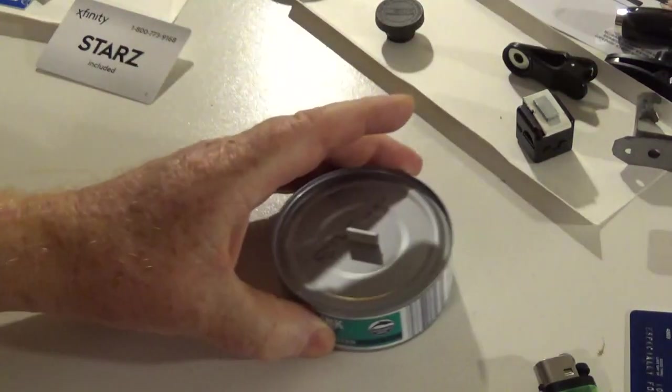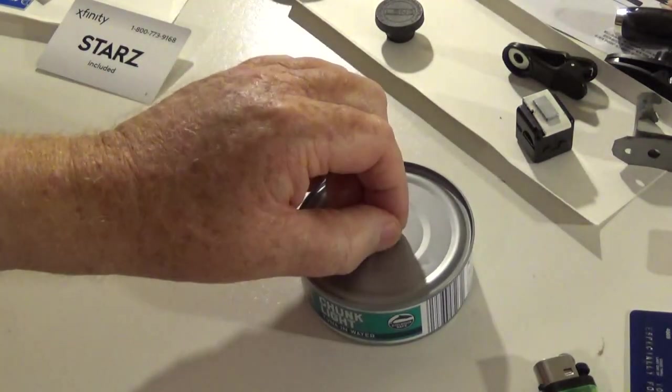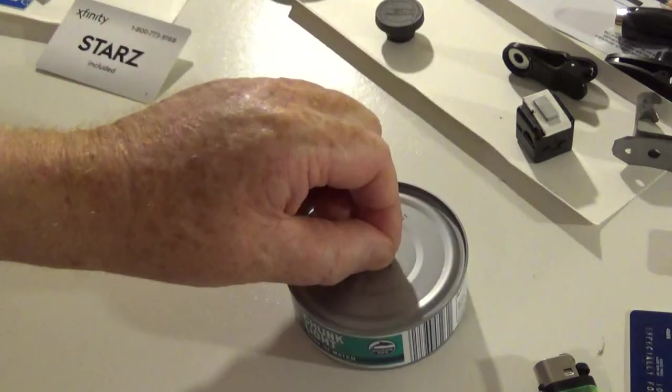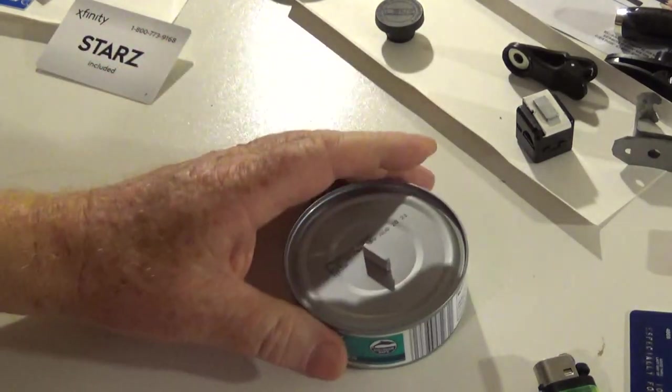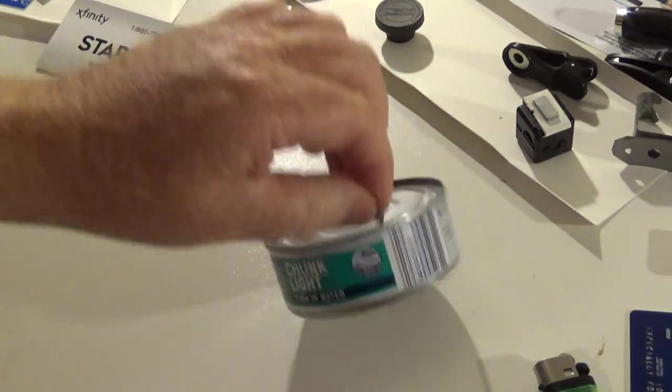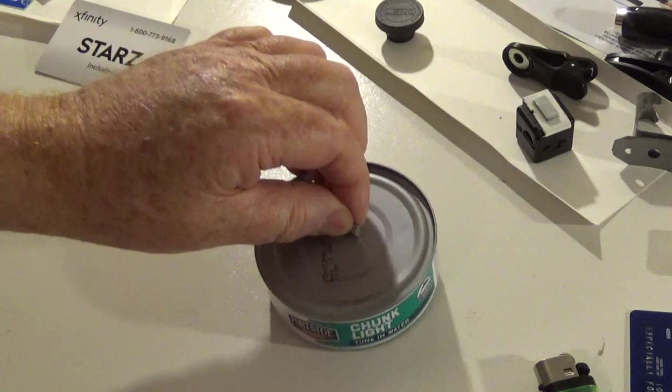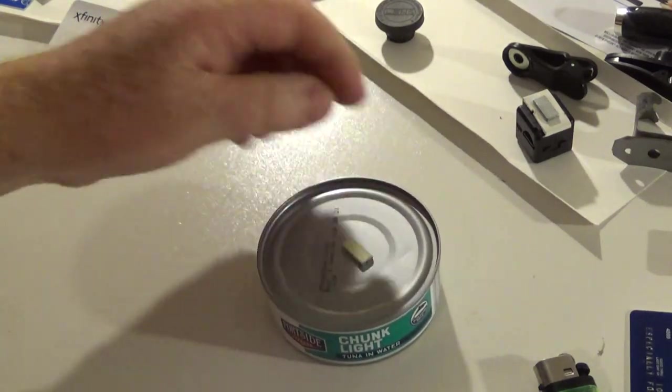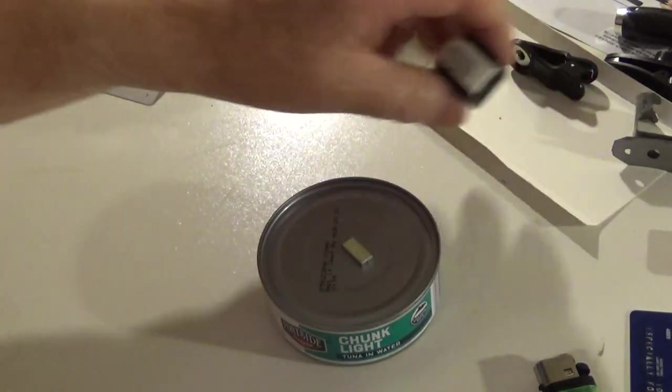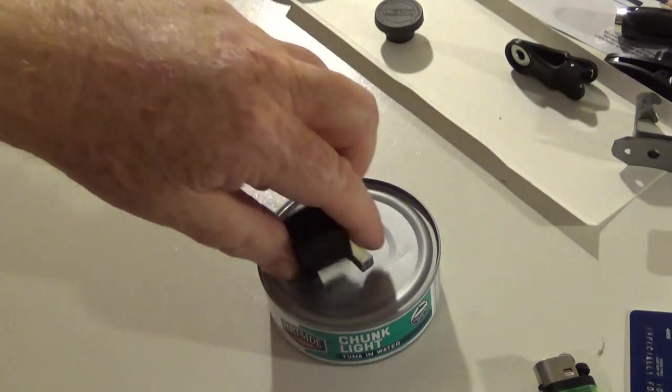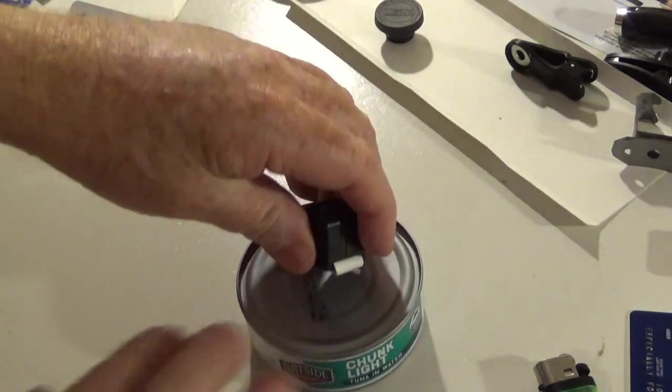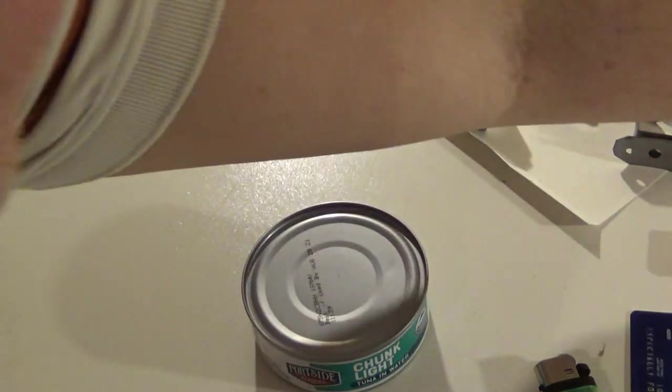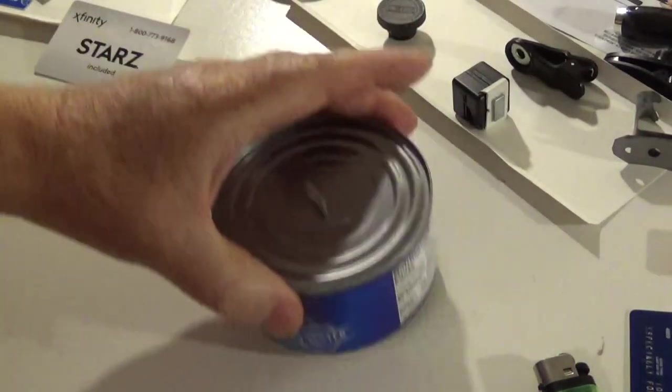Here's one on its edge and it picks up a three ounce can pretty easily just on its edge. So when you have the flat surface down like I have it on the clip here, it's going to have a little bit stronger grip.